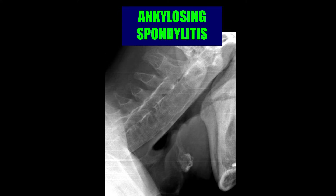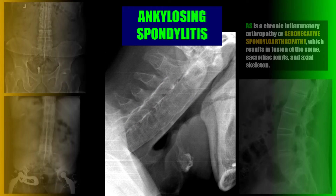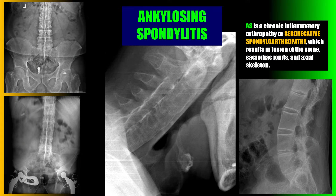Case number two is a good example of ankylosing spondylitis in the cervical spine, with marginal syndesmophyte formation and fusion of the cervical vertebrae, as well as posterior element fusion of the facet joints. Ankylosing spondylitis is a chronic inflammatory arthropathy or seronegative spondyloarthropathy which results in fusion of the spine, sacroiliac joints, and axial skeleton.